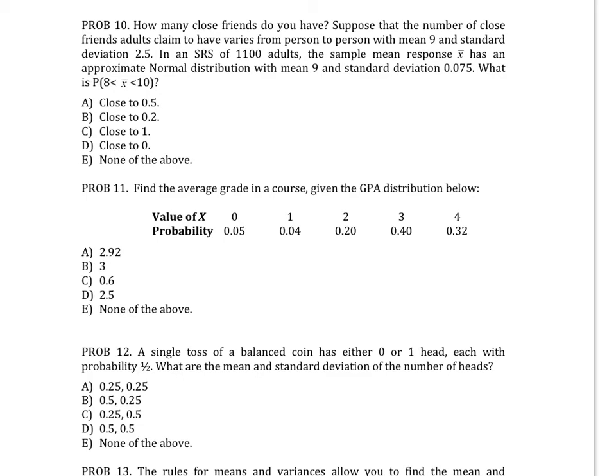Let's try problems 10, 13, and 14. In problem 10, you're given information on the variable known as x-bar, or the sample mean. It's normally distributed with a mean of 9 and a standard deviation of 0.075. We're going to discuss the sampling distribution of the sample mean in unit 5. Right now, I just want you to use the information given to solve the problem about what to expect from the sample mean. What's the probability the sample mean from a sample of 1100 adults is between 8 and 10.